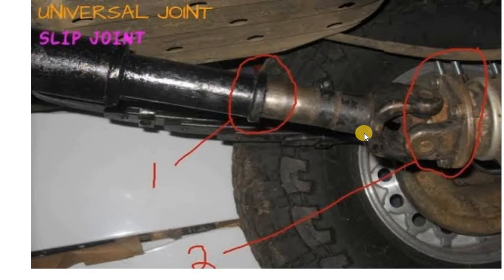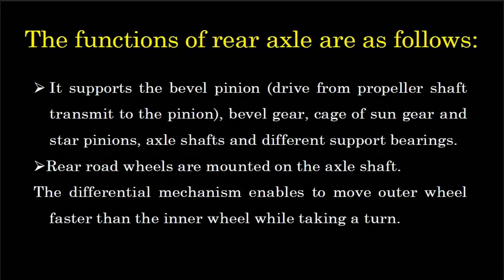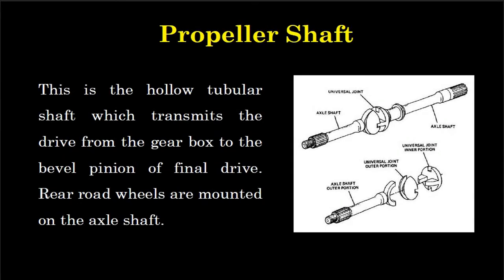यह हमारी propeller shaft है। इस joint को कहते हैं universal joint — इस universal joint से हमारा propeller shaft और differential जुड़ता है। This is the hollow tubular shaft which transmits the drive from the gearbox to the bevel pinion of the final drive. ये tubular shaft है जो अंदर से खाली होती है — खोखले tube के समान shaft जो gearbox से drive को final drive तक पहुंचाती है।